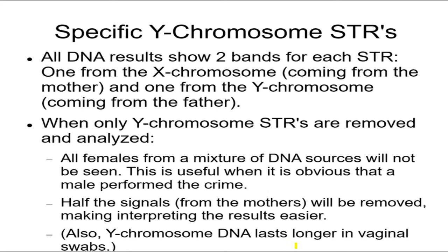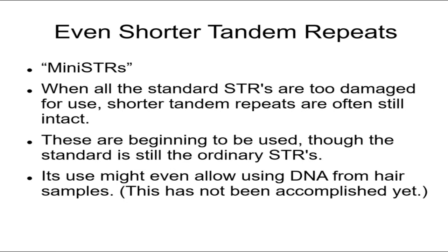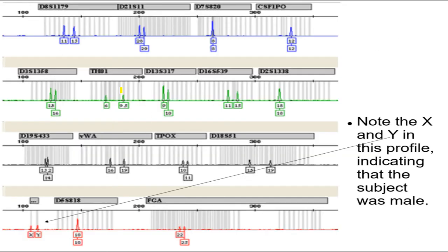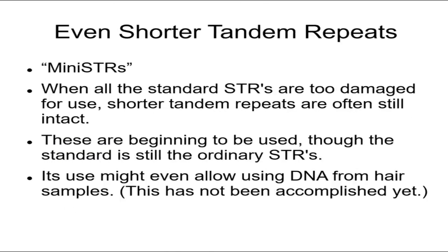That's a slight twist on standard DNA sampling. Now, we want STRs to be short - short tandem repeats - and we've actually found STRs that are even smaller than the standard ones we use. The smaller they are, the less likely they are to be damaged. These mini-STRs aren't standardized yet, but if we get a damaged DNA sample where many of the regular STRs can't be used, mini-STRs are less likely to be damaged and very often remain intact, allowing us to identify who was at the crime scene.